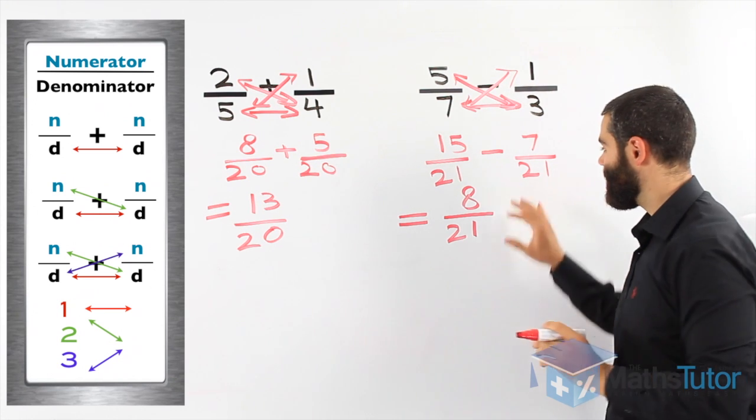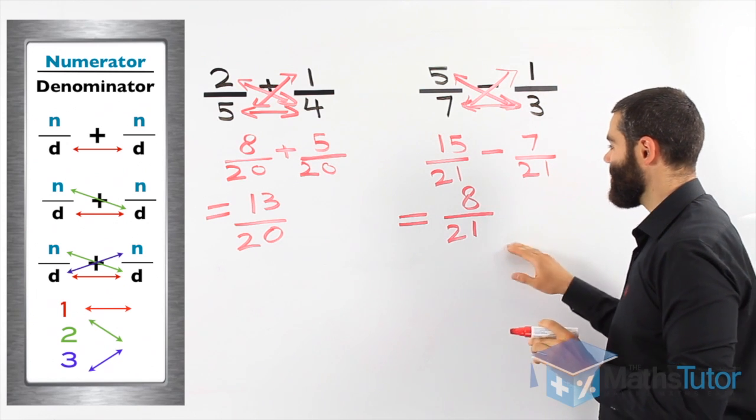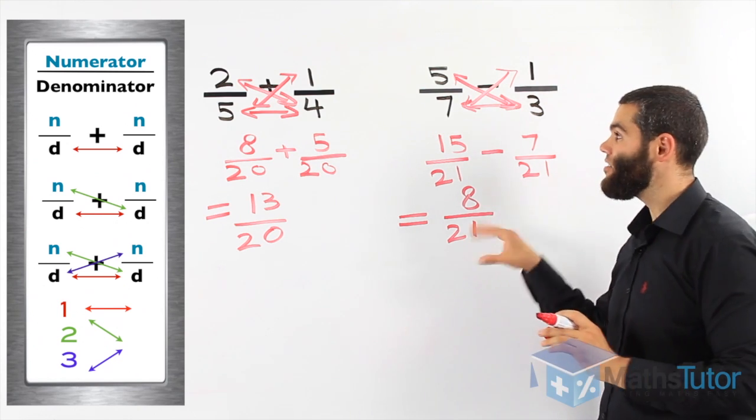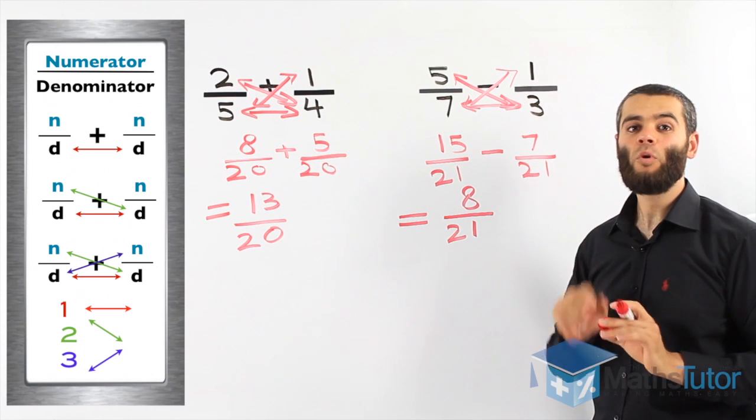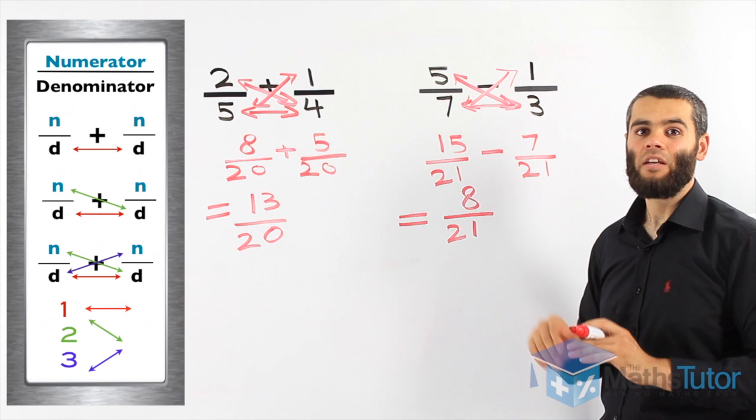Can we simplify? Once again, there is no highest common factor. That's our final answer. It is as simple as that. I'm going to do two more examples. That way, you'll get even better at it.